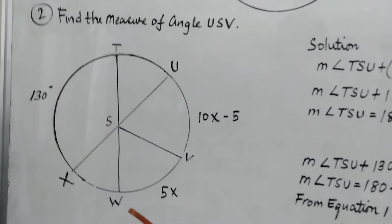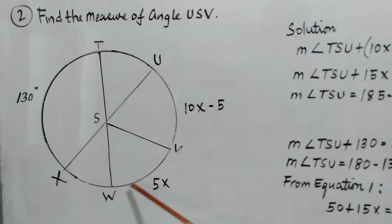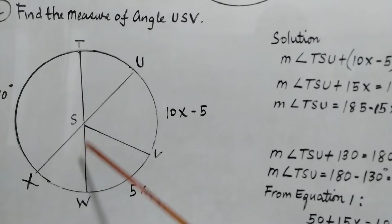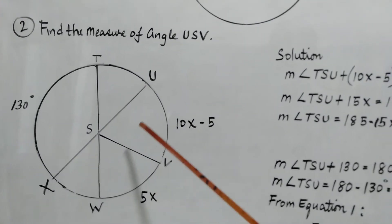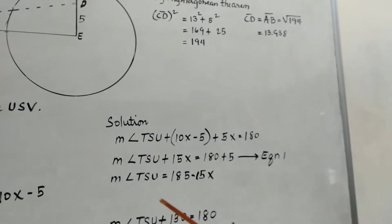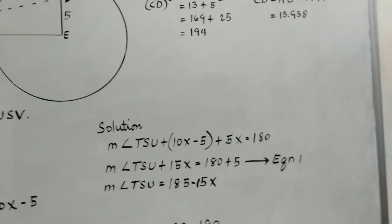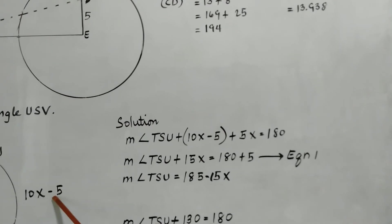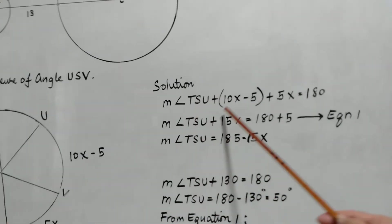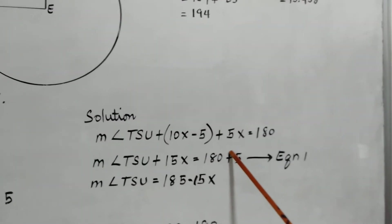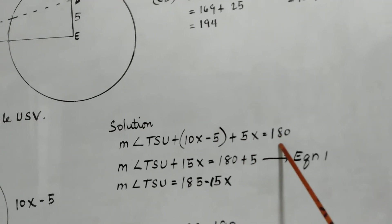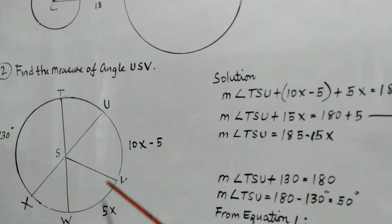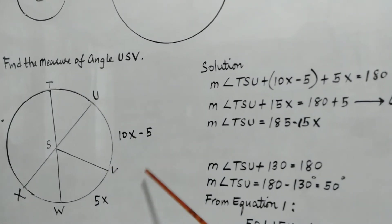So we have here arc WV is 5X, which is equal to the central angle WSV. So for our solution, if you notice, if you add the measure of angle TSU, TSU, plus this arc UV, which is also equal to the central angle, 10X minus 5, plus 5X. All of this is equal to 180 degrees. So TSU, 10X, and 5X. This diameter here, the half circle, is equal to 180 degrees.